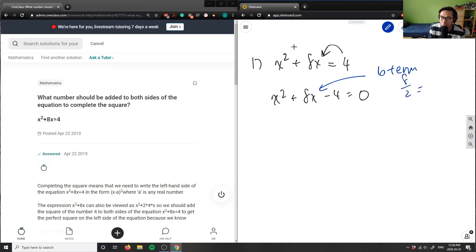So 8 divided by 2 equals 4, and 4 squared equals 16. That's the magic number I'm going to use. So x² + 8x plus 16 minus 16 minus 4 equals zero.